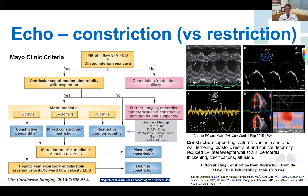Elevated medial E' velocity, the hepatic vein signs of expiratory end-diastolic reversal, as well as strain imaging, showing that the medial septal strain is of greater magnitude than the lateral strain, which is tethered by the pericardium. This criteria was externally validated at the Cleveland Clinic in 2019.